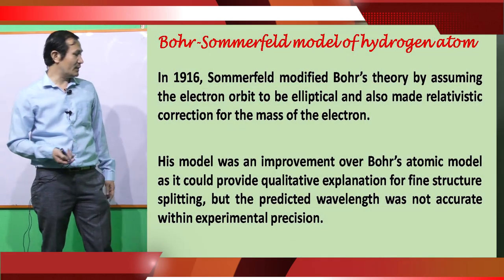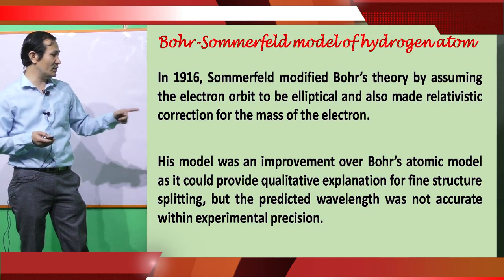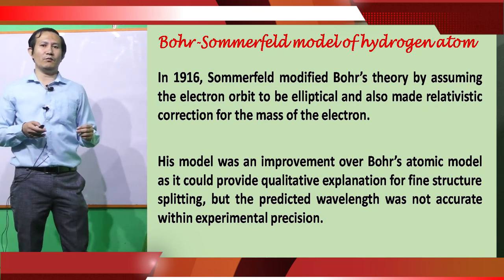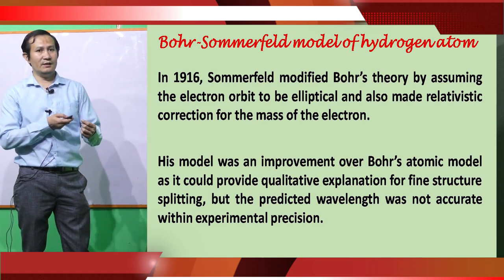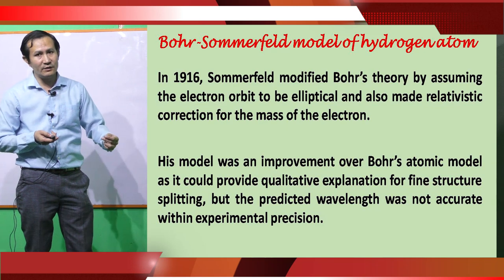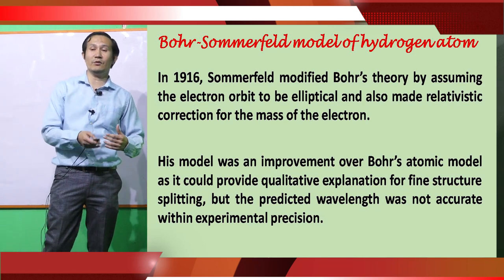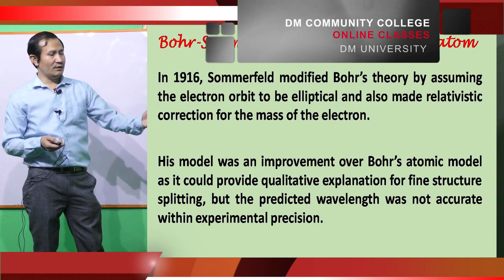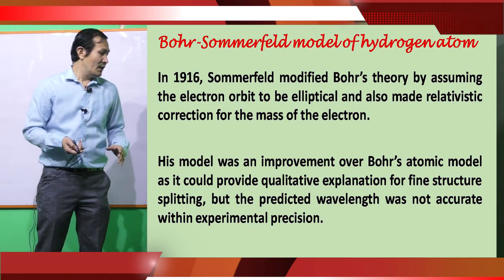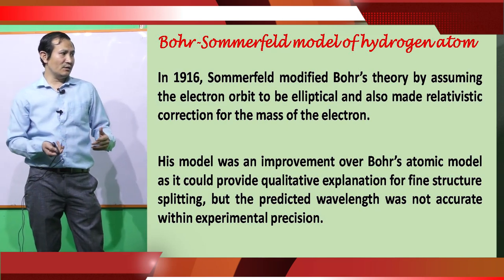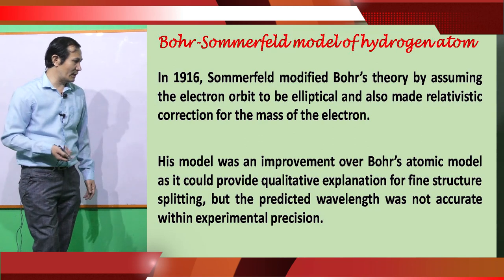Later, in 1916, Sommerfeld modified Bohr's atomic model by assuming the electron orbit is elliptical, and also added a relativistic correction for mass, since electrons move very fast. With this correction, he made some improvement over Bohr's model. The improvement was mainly in qualitatively explaining the origin of the fine structure. However, regarding the prediction of wavelength or frequency, it was not as accurate as Bohr's model.